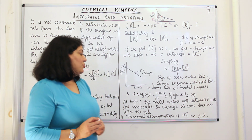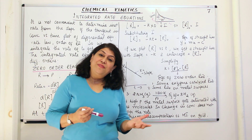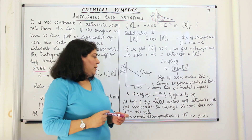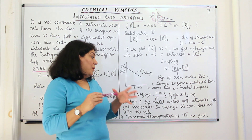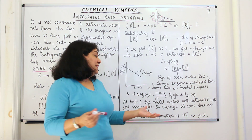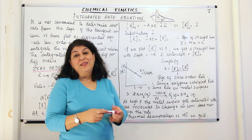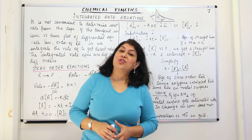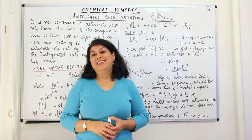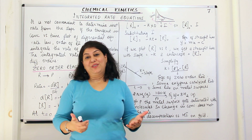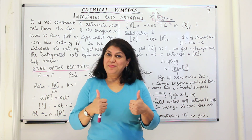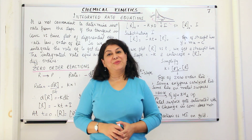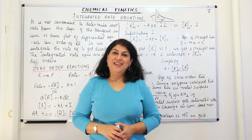Another such example is the thermal decomposition of hydrogen iodide (HI) on gold — again a metallic surface. How many molecules the gold surface can hold determines the rate of the reaction. This was the integrated rate equation for the zero order reaction. If you found this helpful, please give it a thumbs up, subscribe to my channel, recommend it to your friends, and keep returning for more chemistry videos. Thank you for watching.